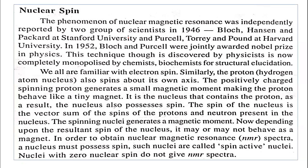When the proton spins about its own axis, it generates a small magnetic moment, making the proton behave like a tiny magnet. Protons are present in the nucleus, so the nucleus that contains the proton also possesses spin.